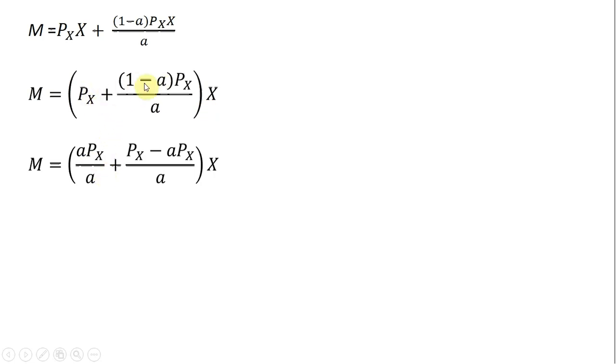Then I'm going to add these two terms together in parentheses, so getting common denominators here. What we'll note here is we've got an A times the price of good X and minus A times the price of good X. That'll cancel. So that'll just leave us this in parentheses, price of good X divided by A. Solving for X, we have the demand for good X for this consumer.